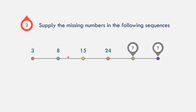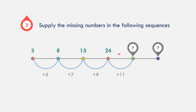From 8 to 15, we add 7. From 15 to 24, we add 9. So 24 plus 11 is equal to 35. The pattern to be added next is 13.